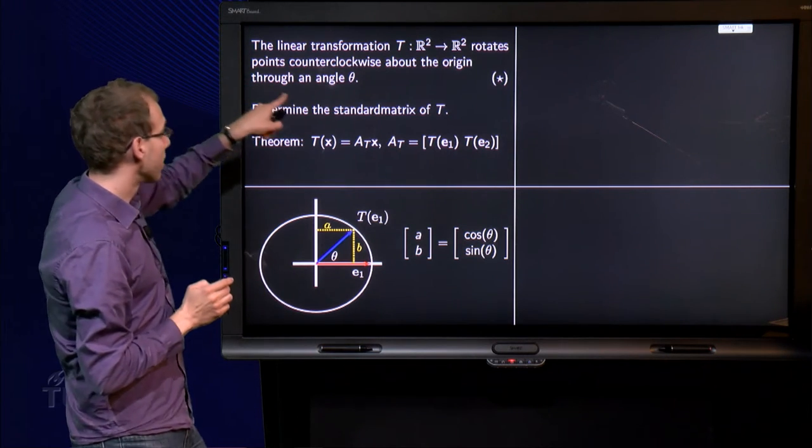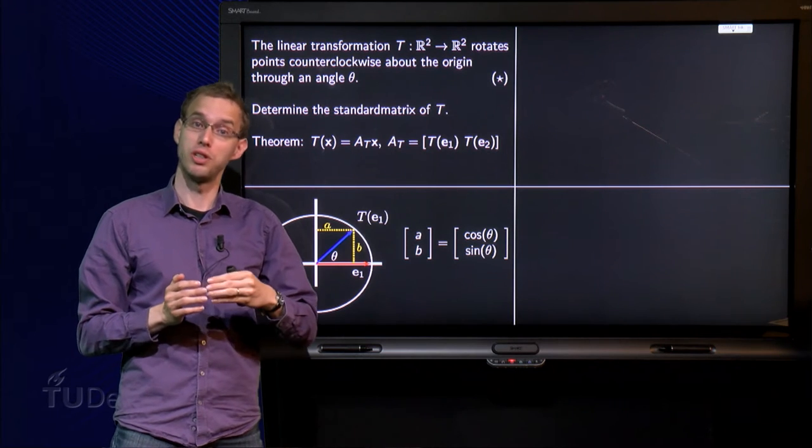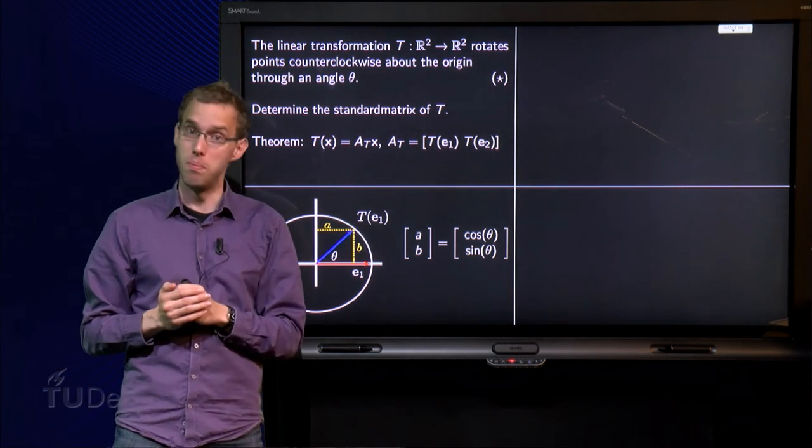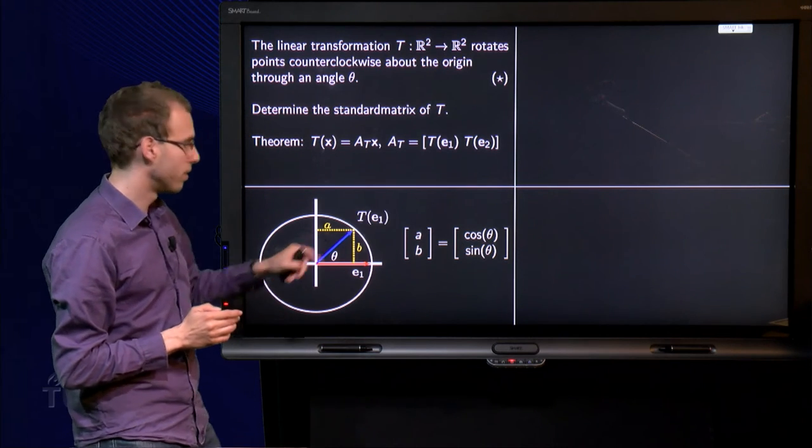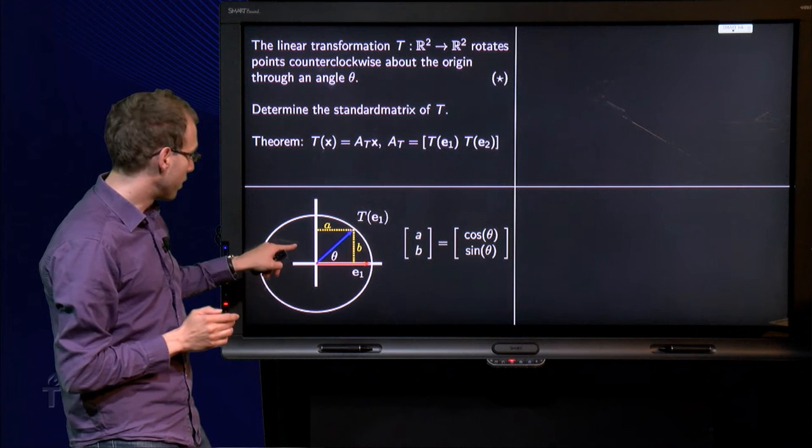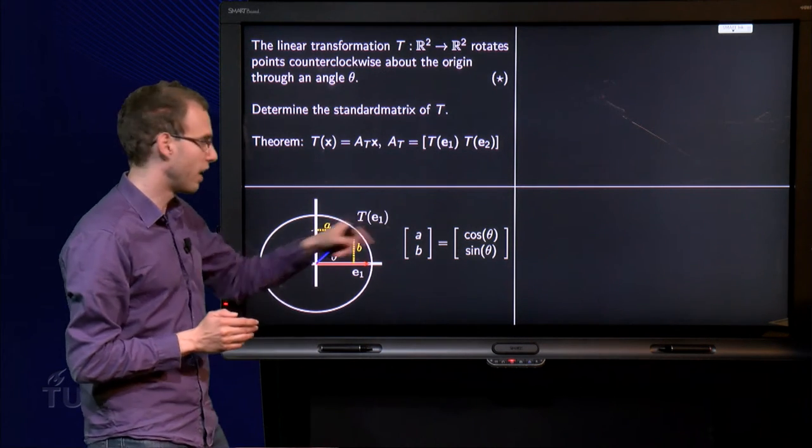Now the transformation rotates vectors counterclockwise around the origin about an angle θ. So e₁ is rotated to the blue vector, T(e₁), over here. Now this blue vector has components A and B, so T(e₁) equals [A, B].